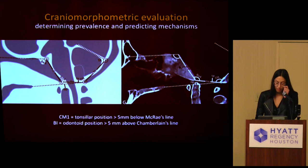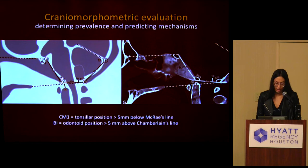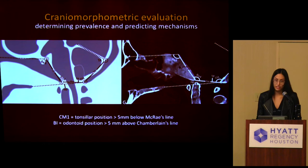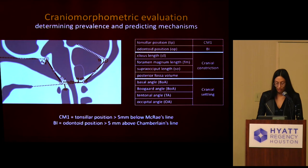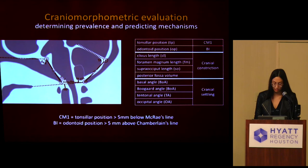For our cranio-morphometric evaluation, we performed nine linear and angular measurements in accordance with the National Institute of Neurologic Disorders and Stroke common data elements. As part of the measurements, we measured tonsillar position to diagnose Chiari and odontoid position to diagnose basilar invagination. We used the definition of greater than 5 millimeters below McRae's line for Chiari, and greater than 5 millimeters above Chamberlain's line for basilar invagination. We looked at various lengths and volumes for cranial constriction and changes in angles for cranial settling.